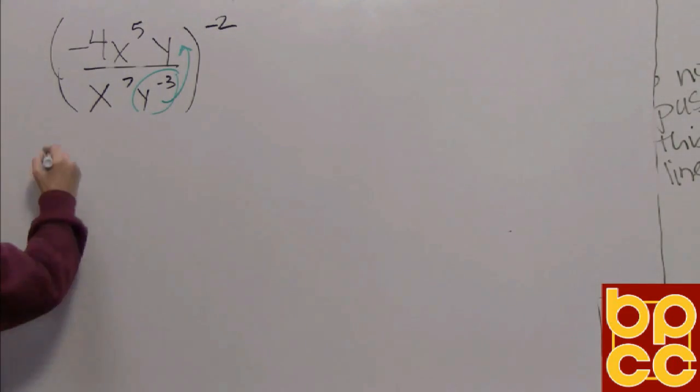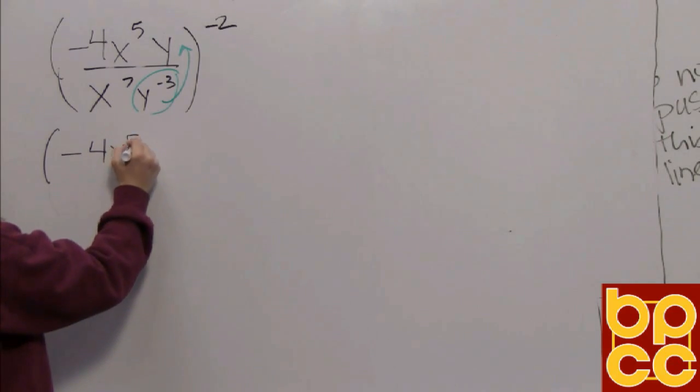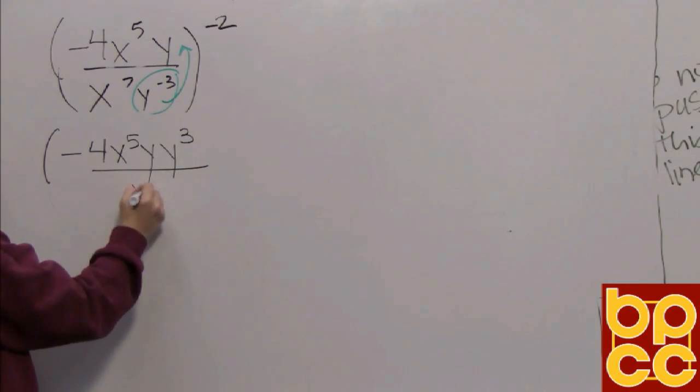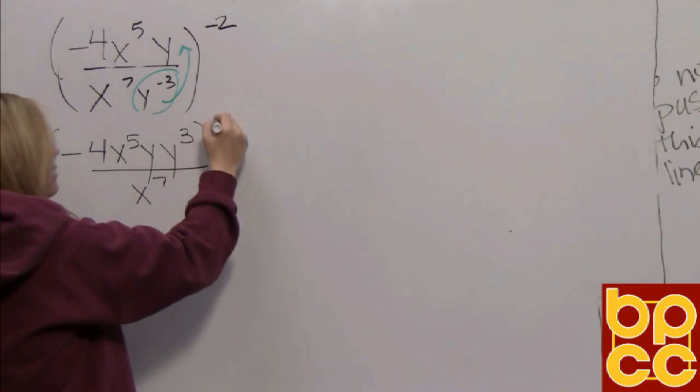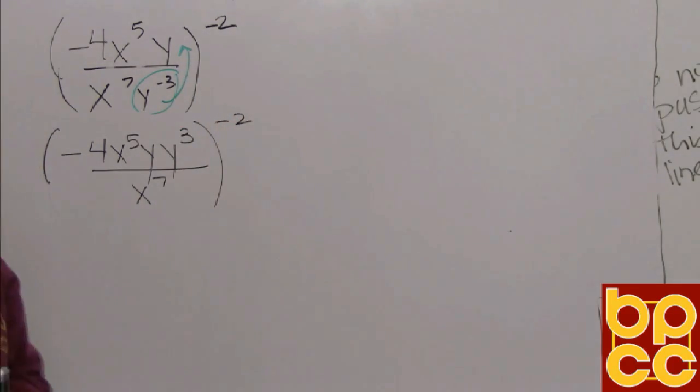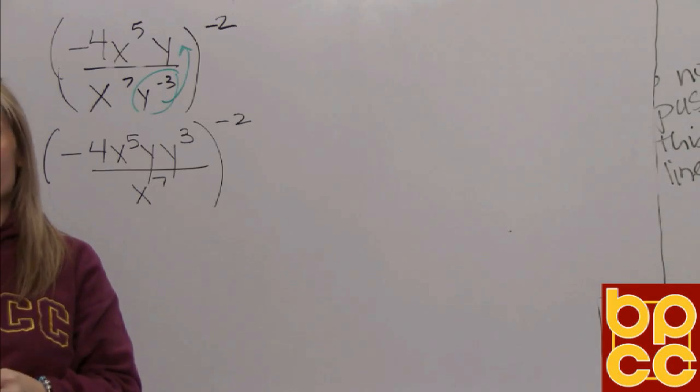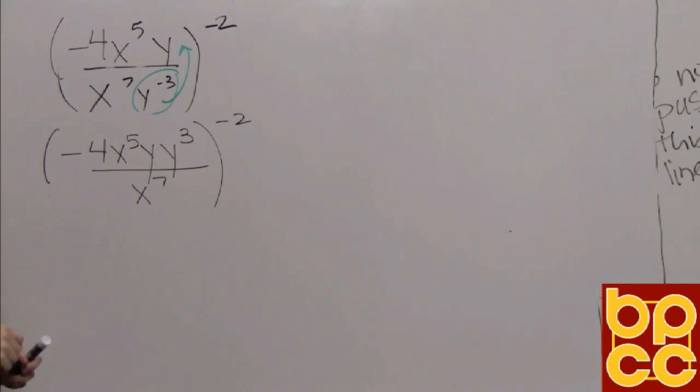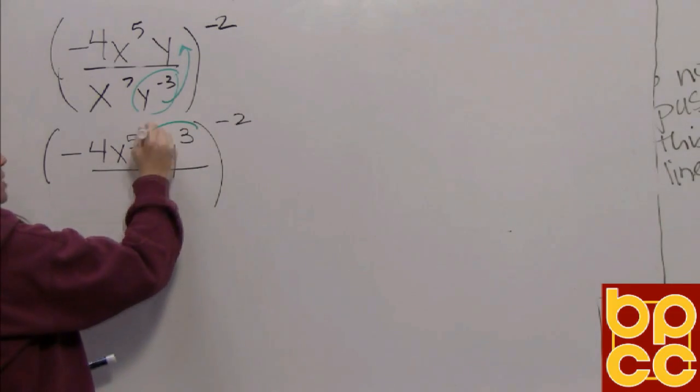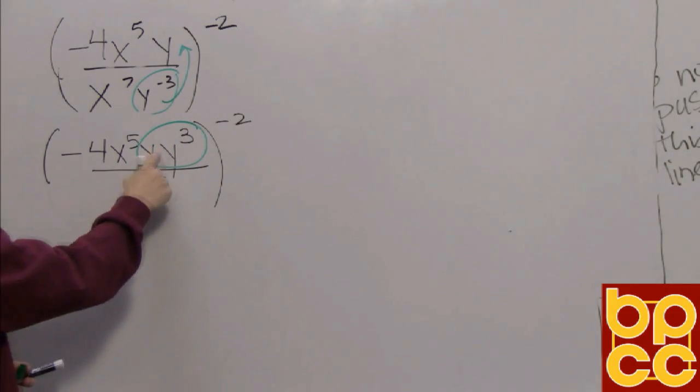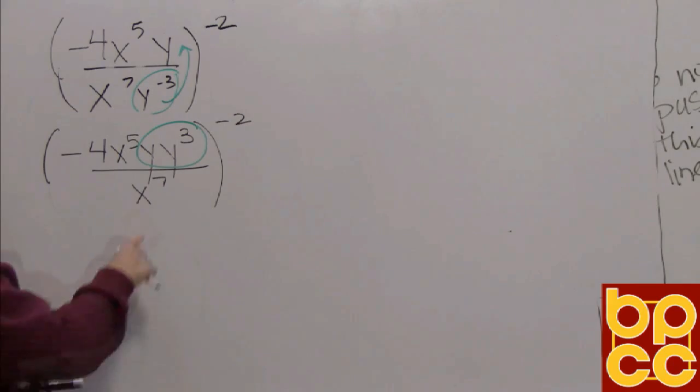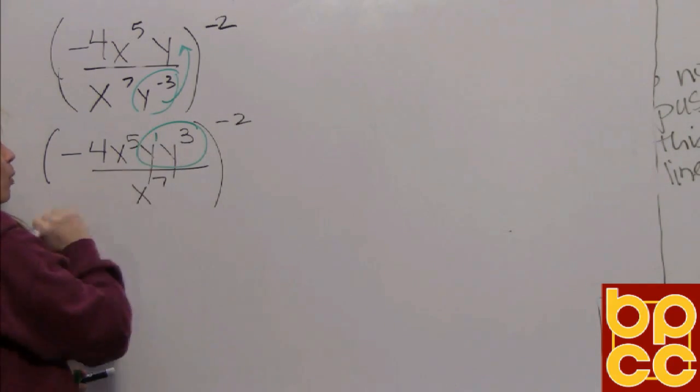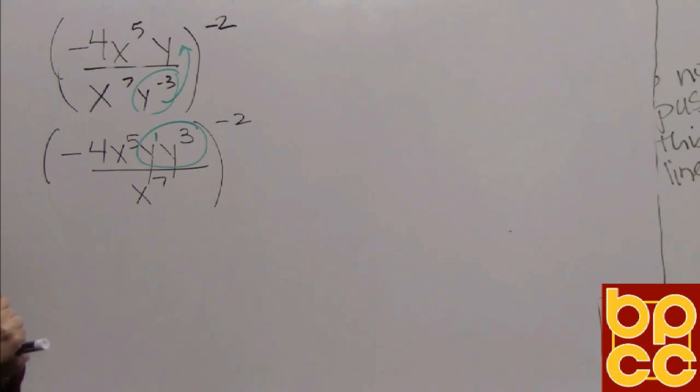Everything else we're going to copy. We're going to leave the negative 4 x to the fifth y and now bring up the y cubed. Leave in the denominator the x to the seventh and leave that negative exponent. You can only deal with one negative exponent at a time. So we're working on the inside first. Well now if you look we have many rules up here. We have learned in previous modules that two variables side by side are connected by multiplication and when you multiply variables you add their exponents. There's an invisible one there and there's a three here so that would make y to the fourth.